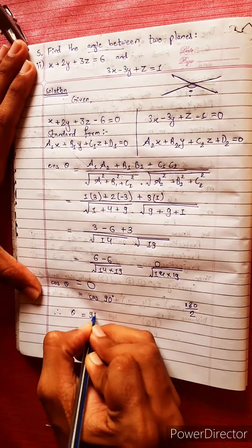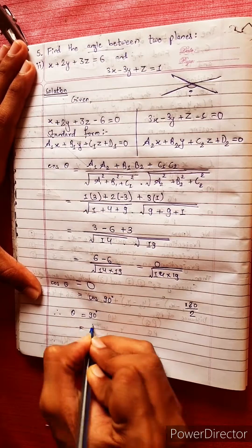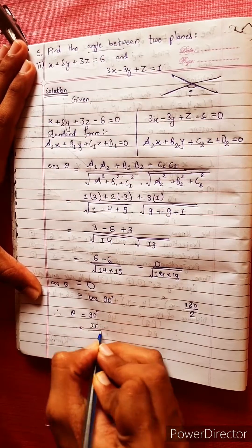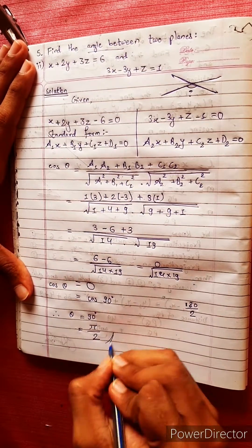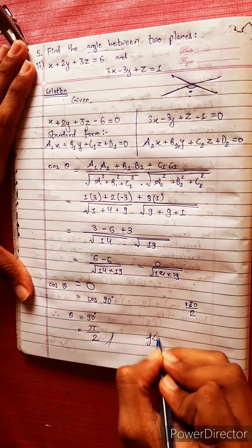Therefore, theta equals 90 degrees, which is pi divided by 2. That is the right answer.